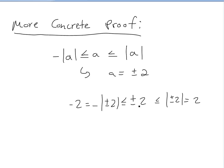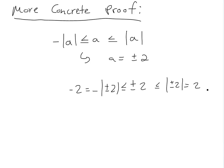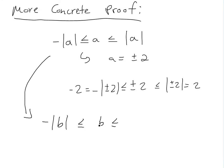This is just another way of saying A equals plus or minus the absolute value of A. Similarly for B, negative absolute value of B is less than or equal to B, which is less than or equal to the absolute value of B, since B could be negative or positive.